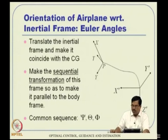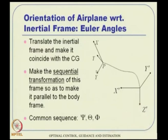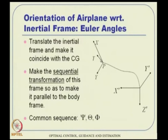What do we really want here? There is an inertial frame and there is a body frame. We want to know the orientation of this body frame x, y, z with respect to the inertial x, y, z. First we want to take the inertial coordinate system and translate it over to the body CG location. Then try to rotate this coordinate system one at a time — first with respect to the z axis, then with respect to y, then with respect to x. Ultimately, this translated coordinate system should coincide with the body axis frame. Whatever angles are required are nothing but psi, theta, and phi.